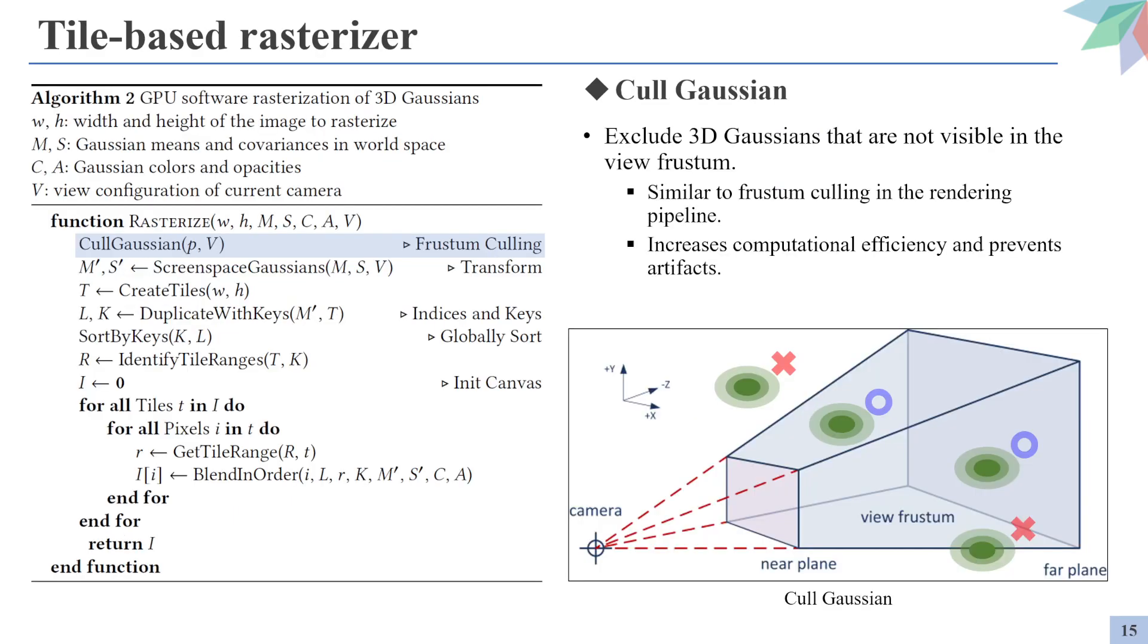Okay, so now let's take a look at what happens inside the tile-based rasterizer. The first step is called Gaussian culling, which excludes the Gaussians that are not included in the view frustum to increase computational efficiency as well as prevent artifacts generated by Gaussians stuck in the borders. This is similar to the frustum culling used in computer graphics.